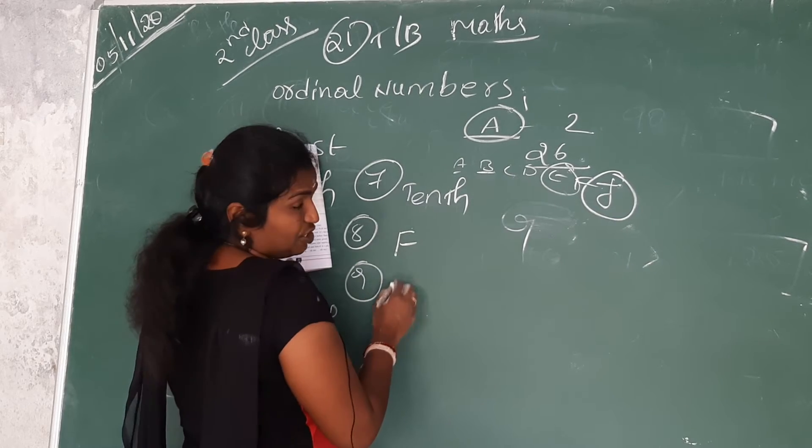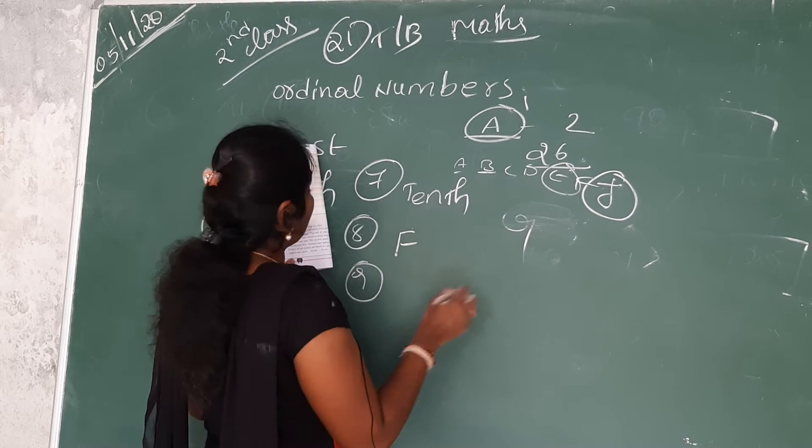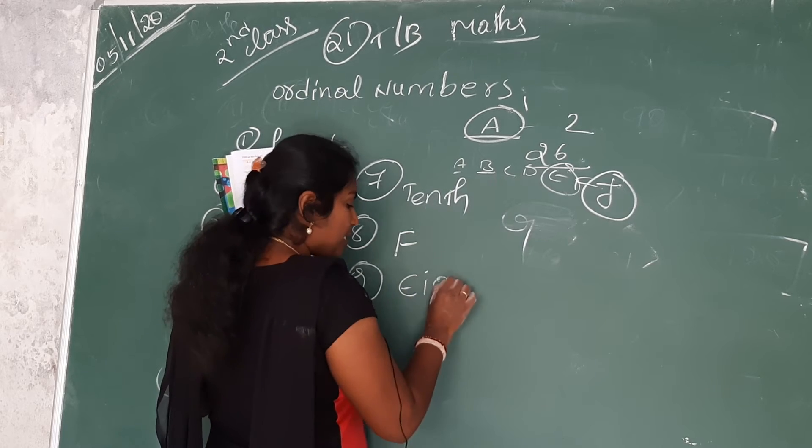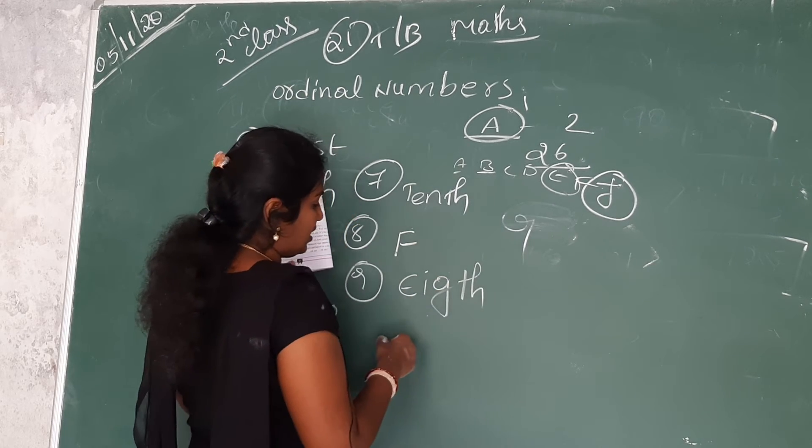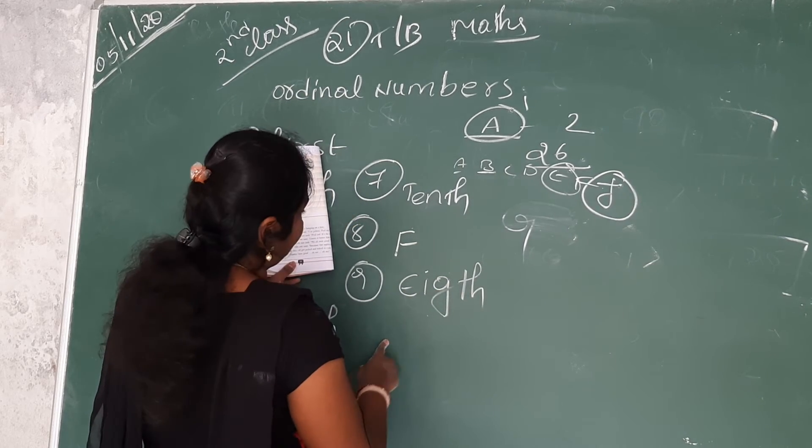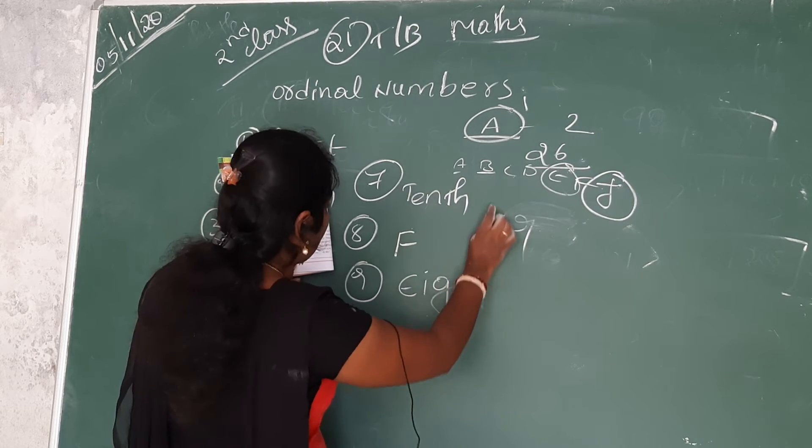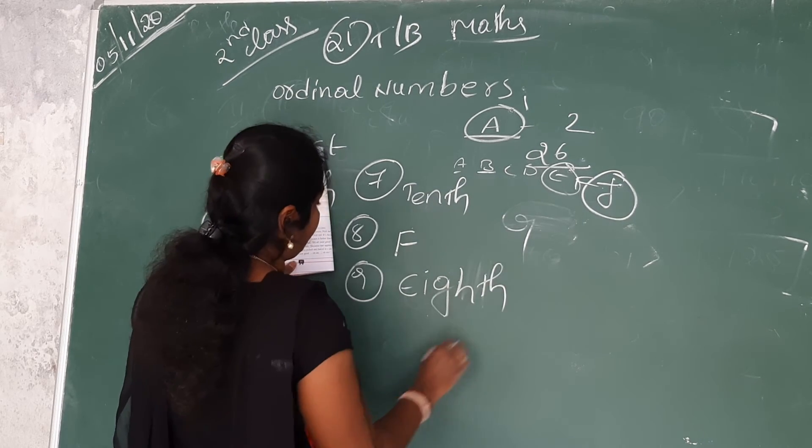Ninth one. H is the dash letter of the alphabets. H is in eighth place. E I G H T H. Eighth.